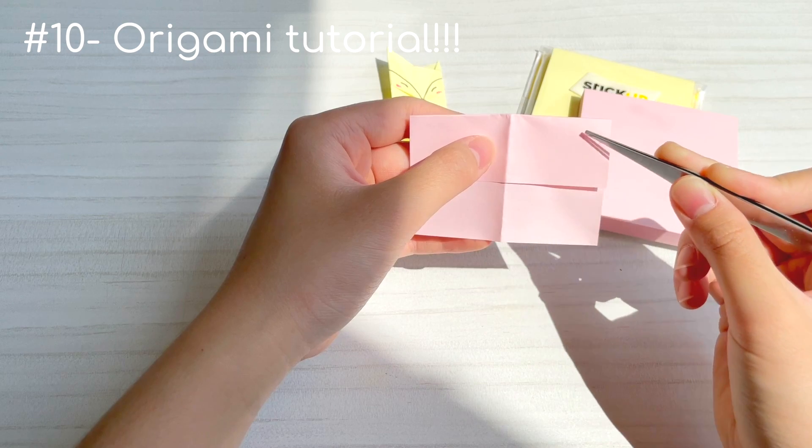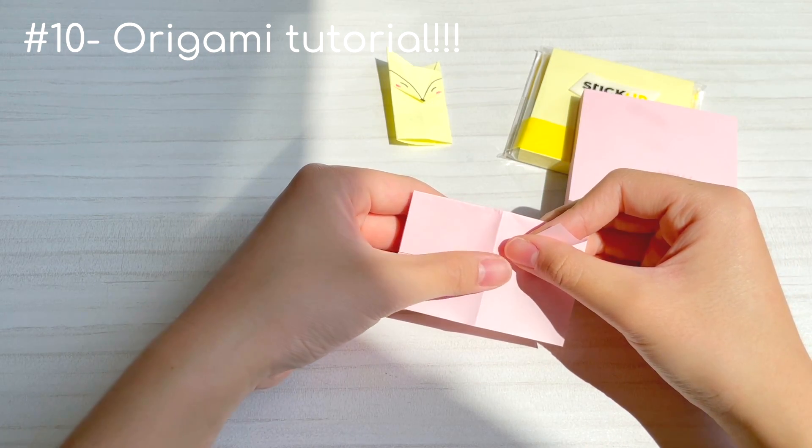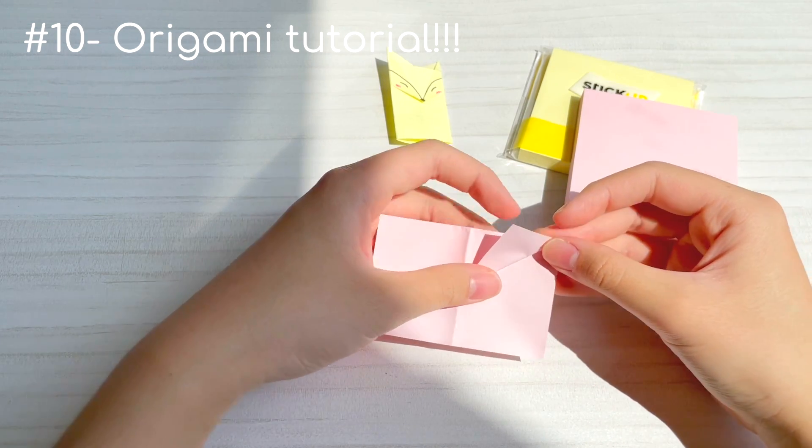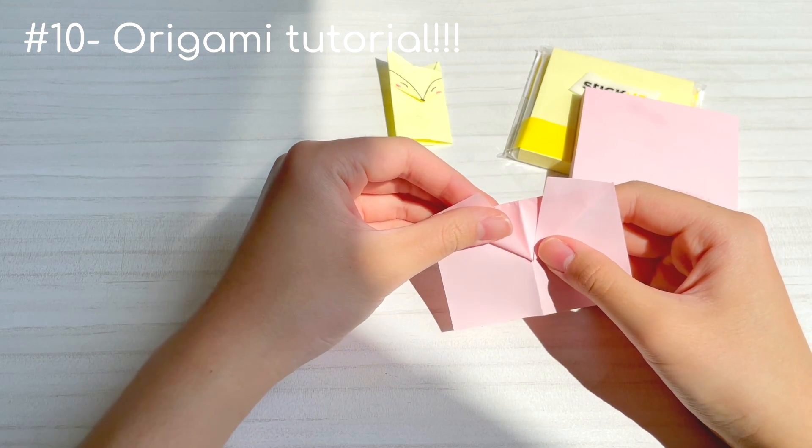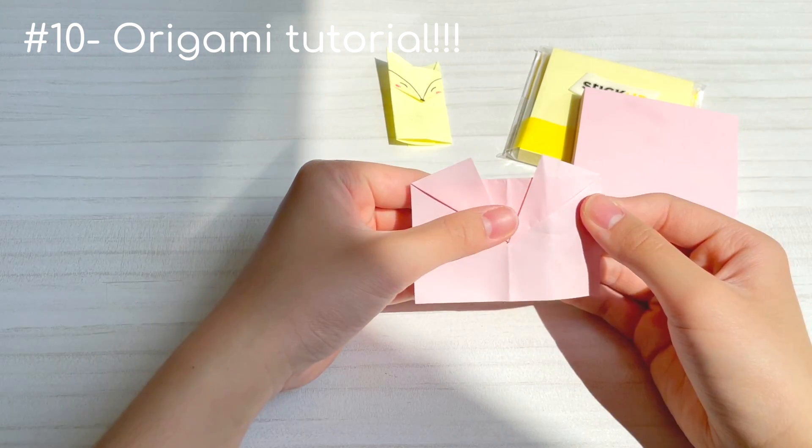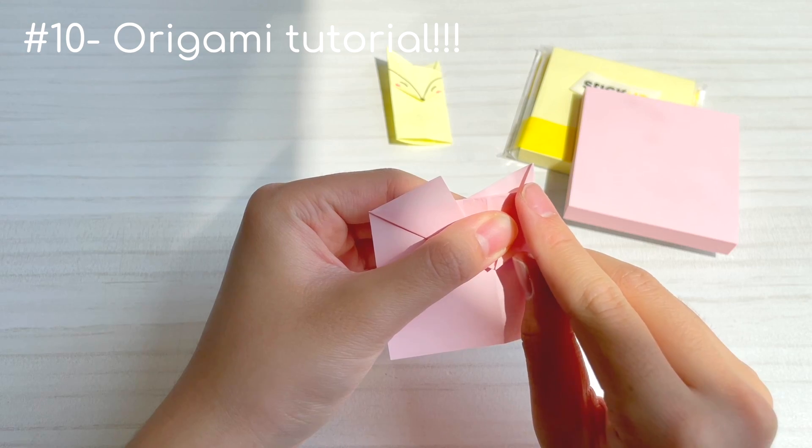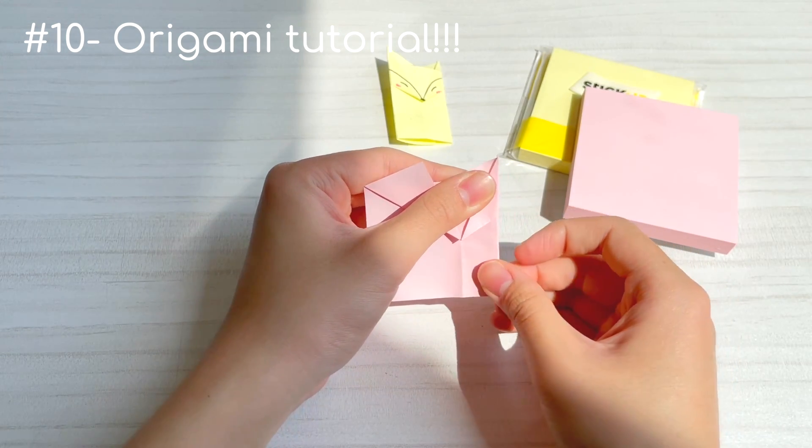From there, fold a diagonal line that reaches from this cross-section to the top right corner. Repeat on the other side. Fold the origami back so the horizontal line aligns and create a sharp fox ear.